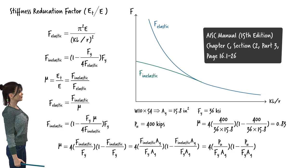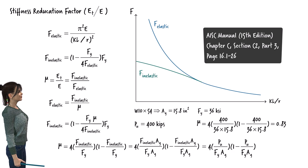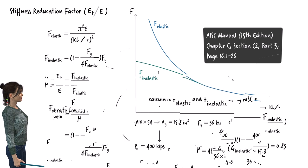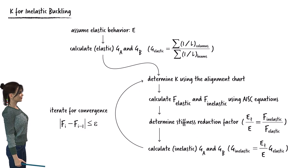Given that the AISC equations for compressive strength against buckling are conservative approximations of the theoretical buckling equations, we shall use the AISC equations as the primary method for determining the effective length factor, and the direct formula as a secondary approach. We now demonstrate the iterative process using an example.